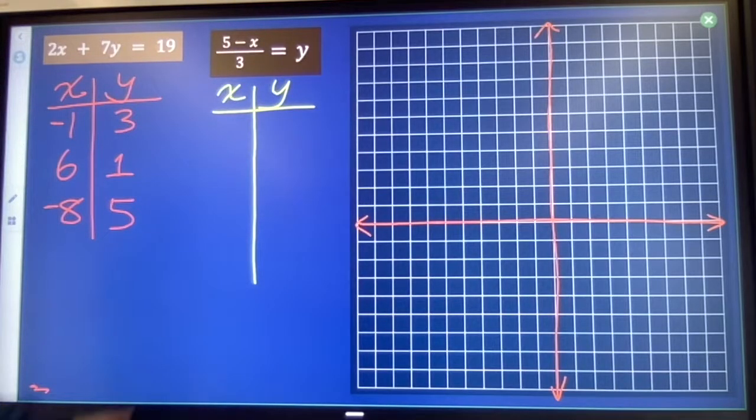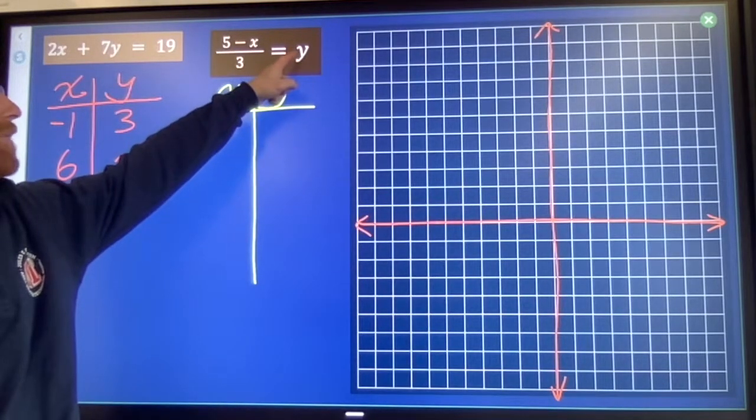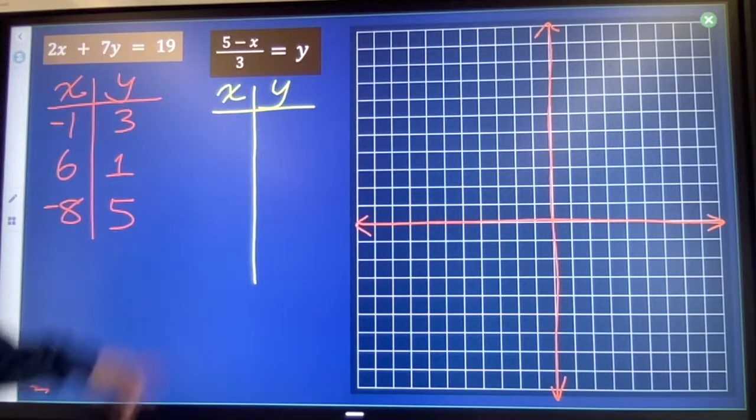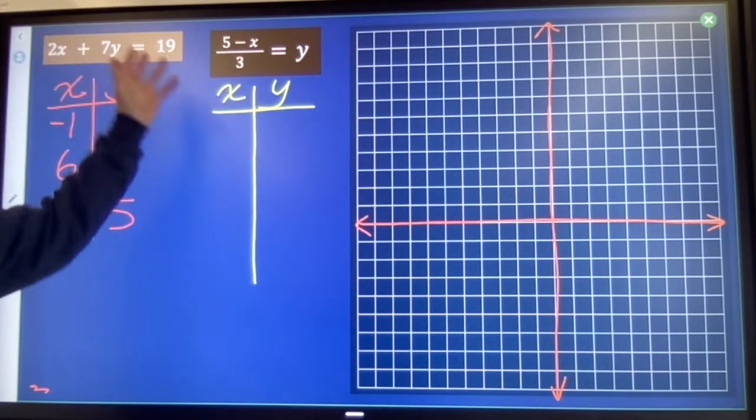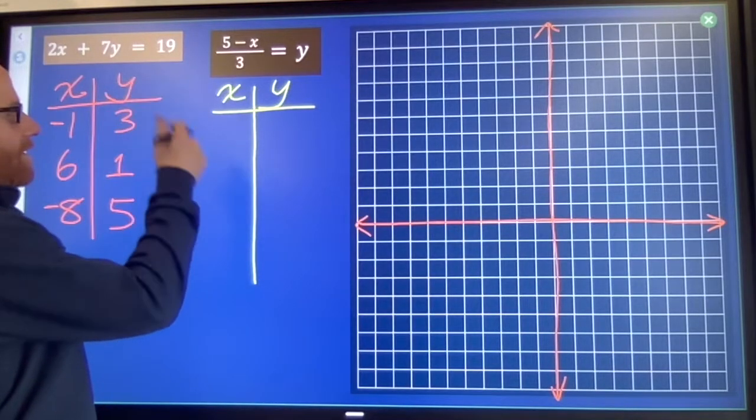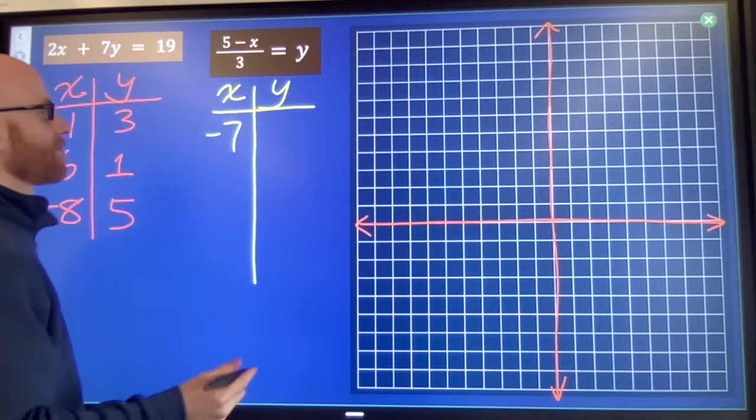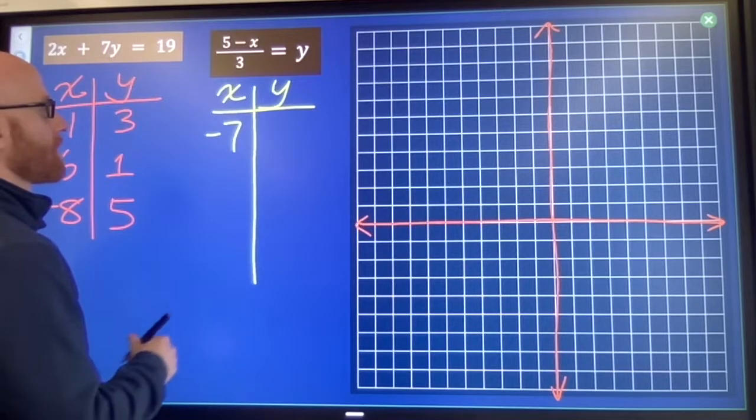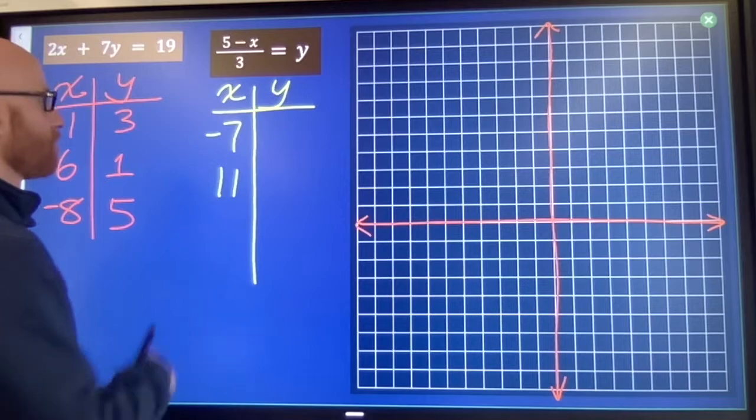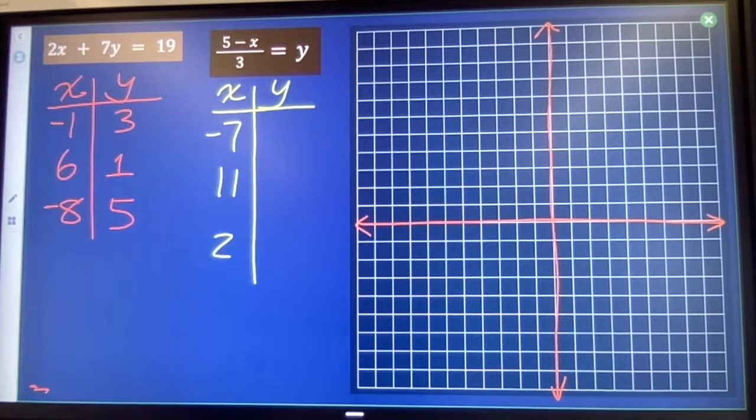Situation like this, a whole lot easier because y is isolated, and that means that I can just pick some x values like negative 7, 11, and 2, and then solve for y.